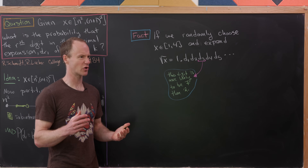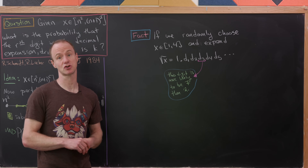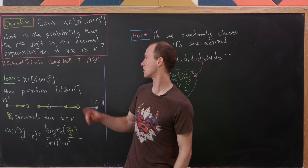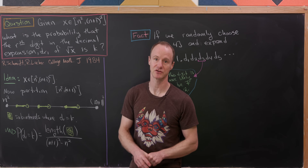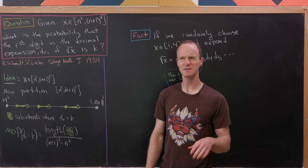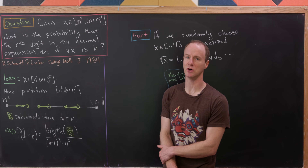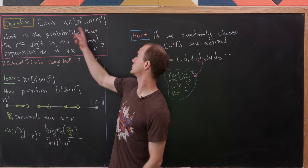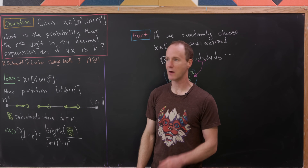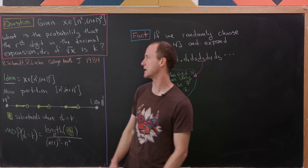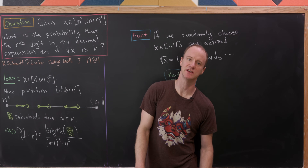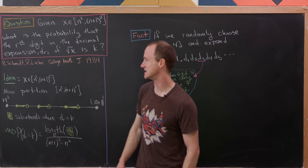That seems like a crazy thing, but it is in fact true. Along with a more general result, this is something I found in an article from 1984 in the College Math Journal, and we're going to look at part of that result today. Let's sharpen this into a question: given x between n² and (n+1)², those consecutive perfect squares, what's the probability that the r-th digit in the decimal expansion of √x is k? For notational convenience, we'll call that r-th digit d_r.